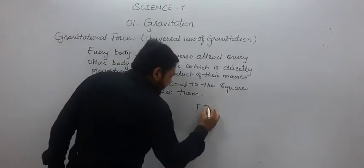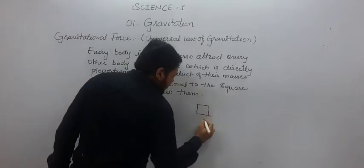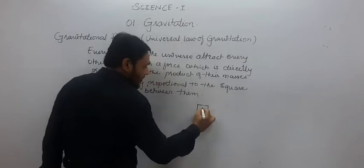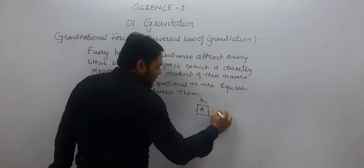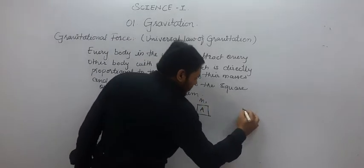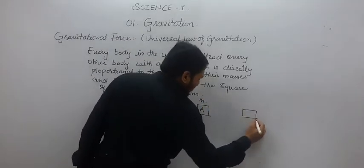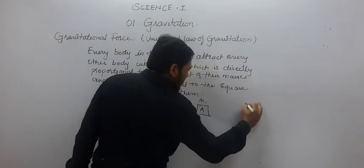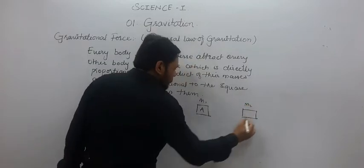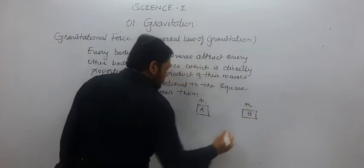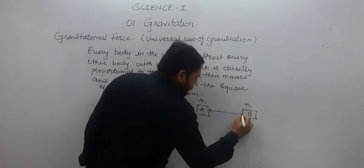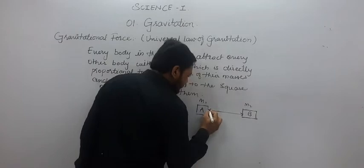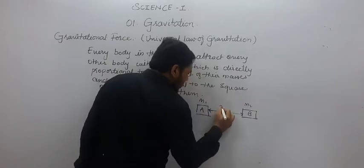I will draw the diagram. This is body A with mass m1, and this is body B with mass m2, and the distance between these two bodies is r.